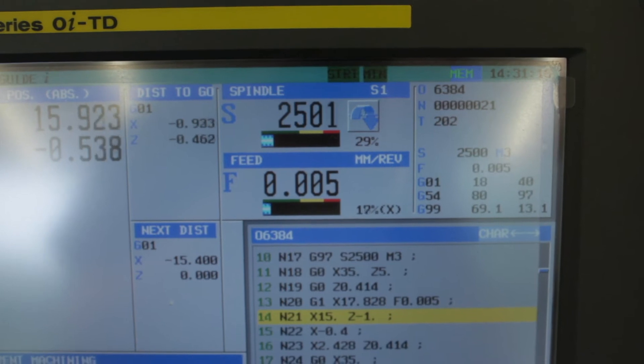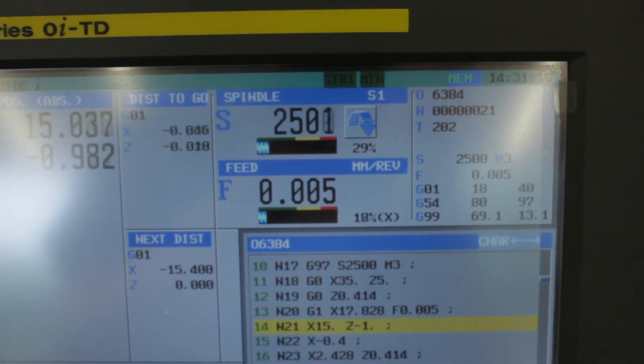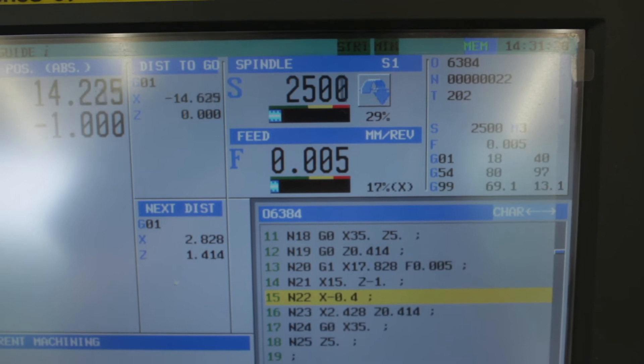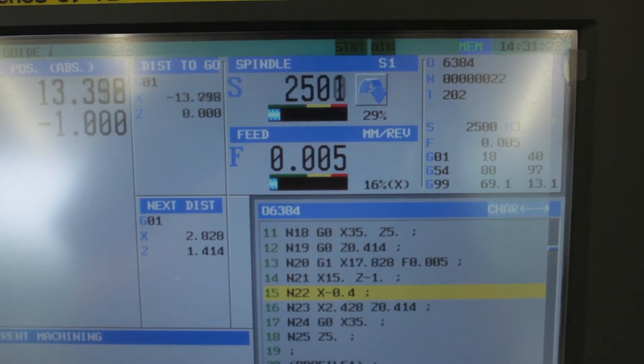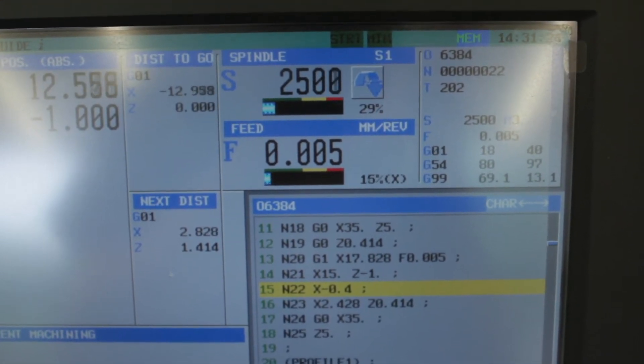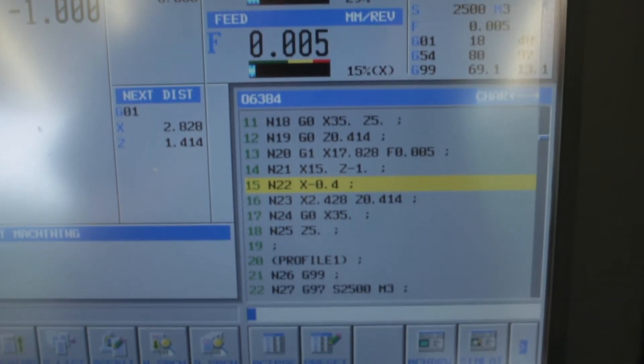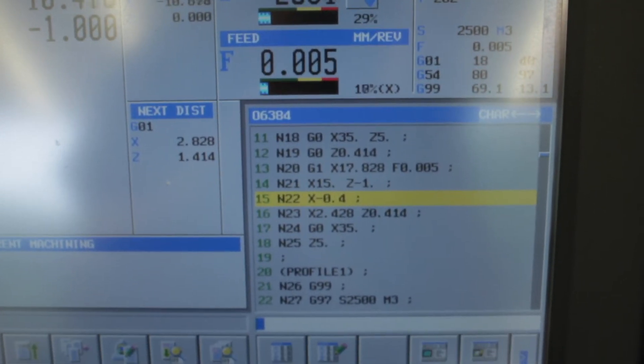This is just showing some cutting parameters. We're going for 2,500 rpm and a feed rate of just 0.005 per rev, and we've got flood coolant on. Here we are just walking through our program.